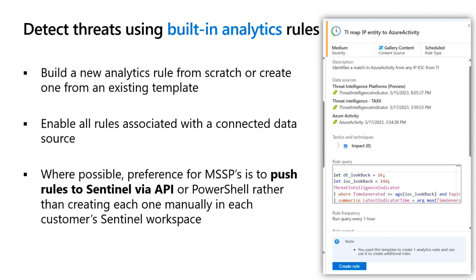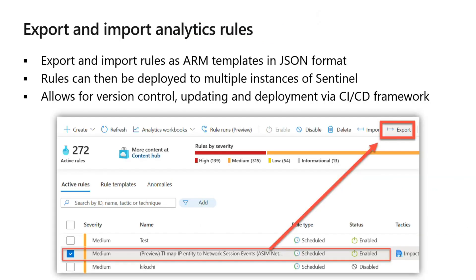It can be valuable to do it this way because it allows you to do this at scale very quickly. This can also be done using repositories. When you export your rules, you go into your analytics rules, highlight one, and click Export or Import. It will export them as ARM template files, and you can then import rules from those files as part of managing your Sentinel deployments as code.